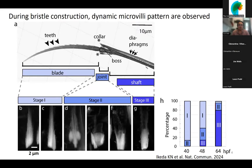We next looked at how morphology is conveyed to the bristles. What you see here is a refractive index micrograph of a day-three bristle, with the typical organization of the bristle structure: the blade, the joint, and shaft parts — a common organization found in the bristles of bristle worms. Each individual part has micron-scale features such as teeth on the blade part, a corner and boss on the joint part, and diaphragms inside the shaft.